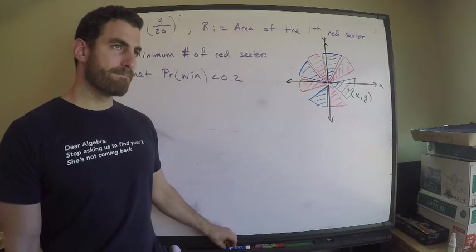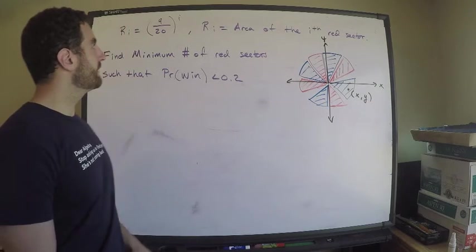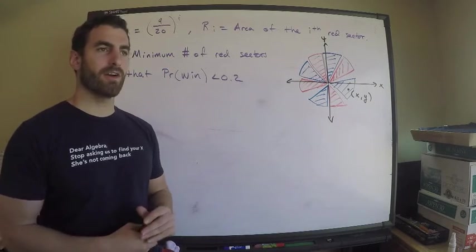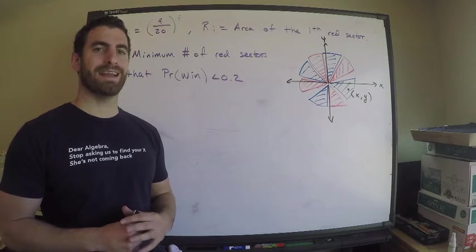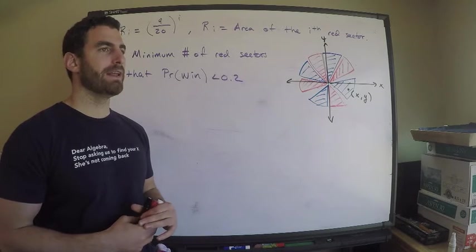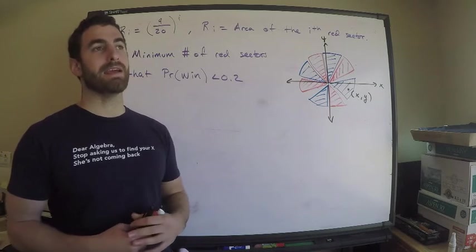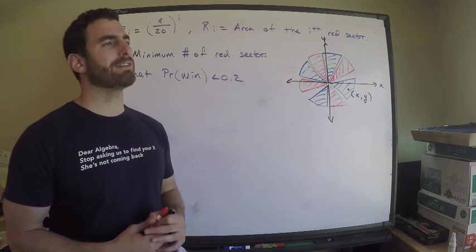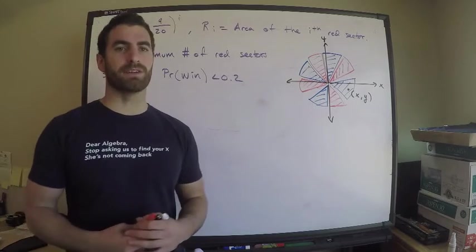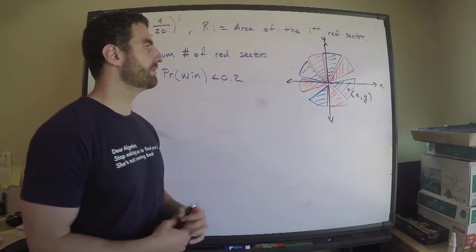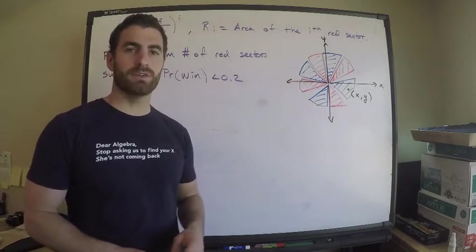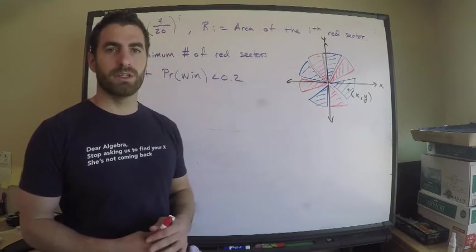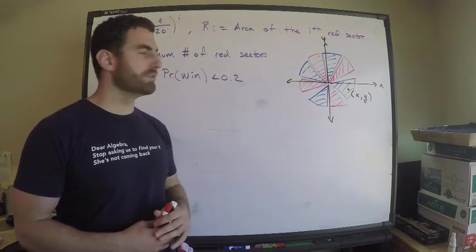Here's the problem. We're given r sub i equals 9 over 20 to the i, and r sub i represents the area of the ith red sector. They don't specify this in the question, but when I hear sector I think sector of a circle, so these are sectors of my circle.